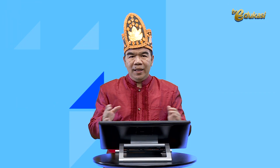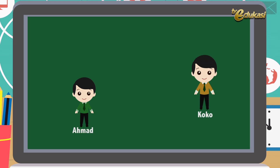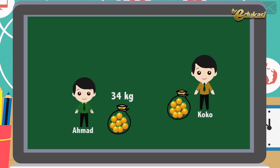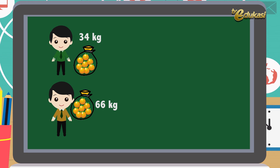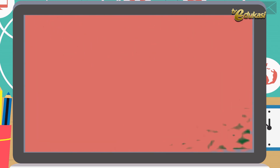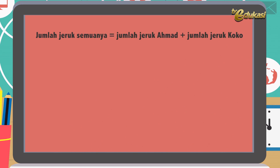Sekarang Bapak akan memberikan soal tentang sifat distributif dalam bentuk HOTS atau Higher Order Thinking Skill. Ahmad dan Koko membeli jeruk. Mereka masing-masing membeli 34 kg dan 66 kg jeruk. Jika setiap 1 kg jeruk terdiri atas 8 buah jeruk, berapa banyak jeruk yang mereka beli? Jumlah jeruk semuanya sama dengan jumlah jeruk Ahmad ditambah jumlah jeruk Koko, atau 34×8 ditambah 66×8, atau 8×(34+66), atau 8×100, atau sama dengan 800.